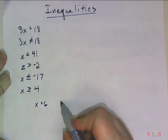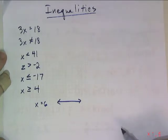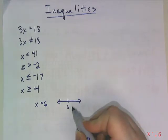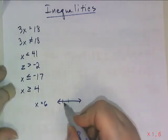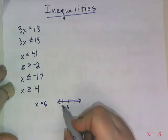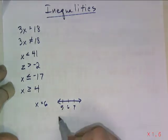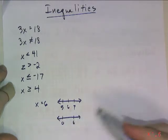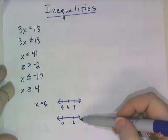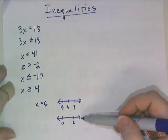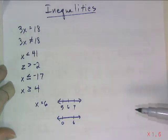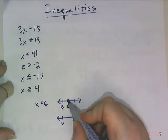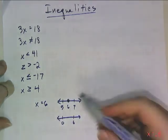The way that I would graph x = 6 is to draw a number line. You have two options: I can either put my number in the middle with the adjacent numbers on either side, or I can show where 6 is in relationship to 0. Not every number line has to have a 0 on it. Whichever number line you draw, graphing the solution just requires putting a dot on top of 6.